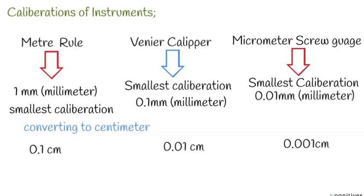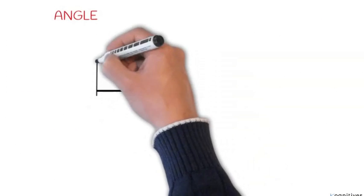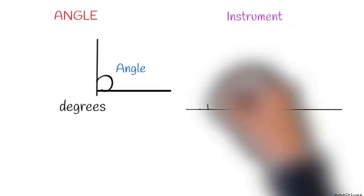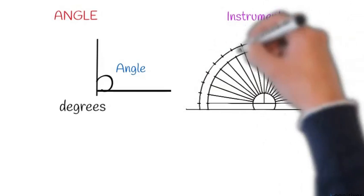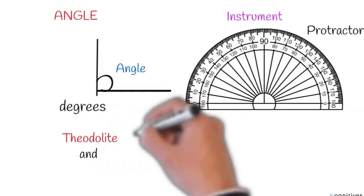Let's talk about our measurement of an angle. An angle is formed when two lines intersect each other or when two planes intersect each other. An angle is always measured in degrees. The instruments used for measuring angles are the protractor, the theodolite, and the bevel square.